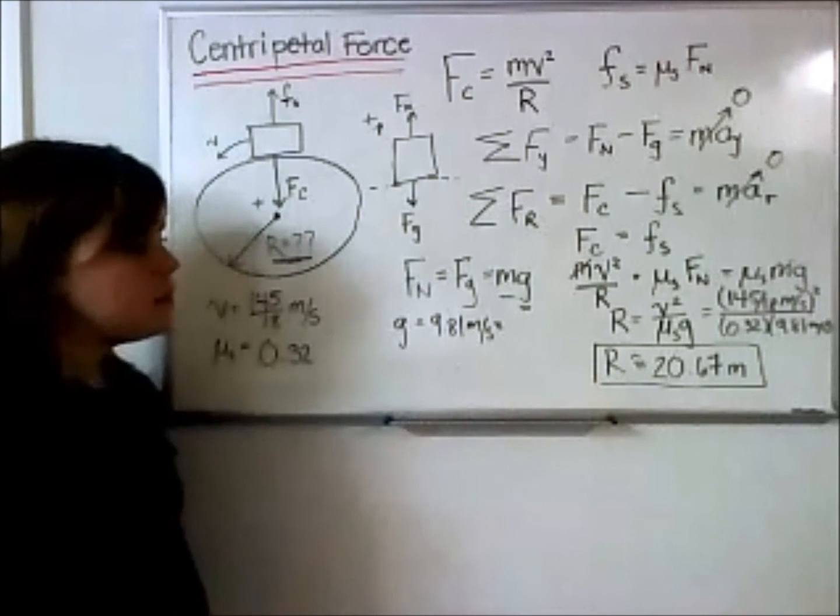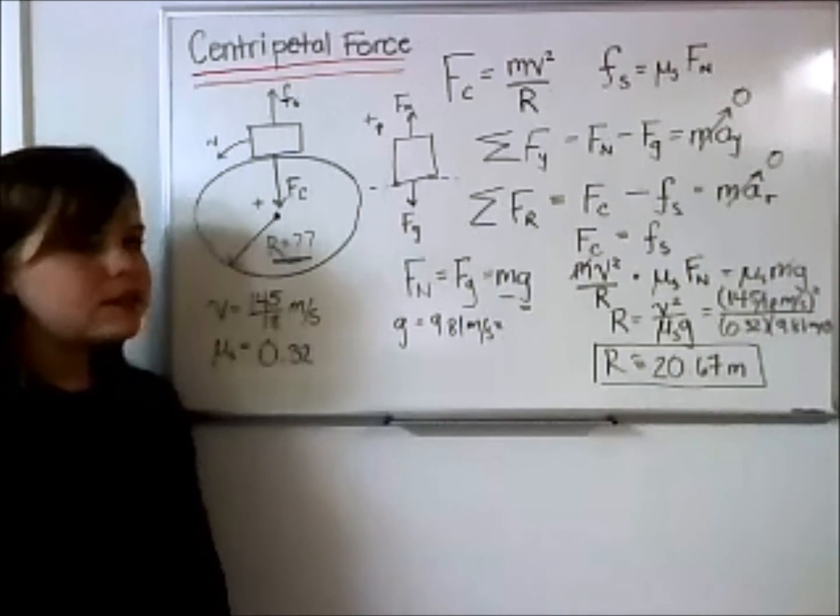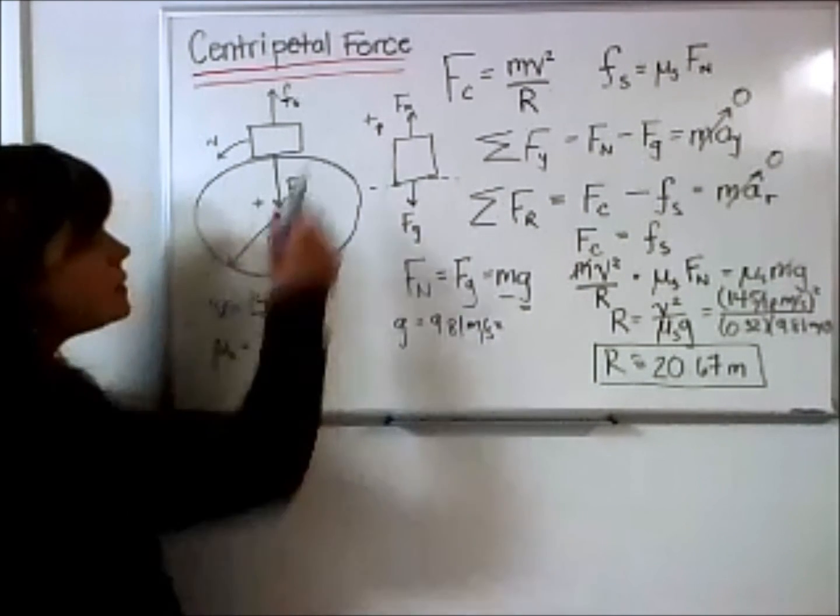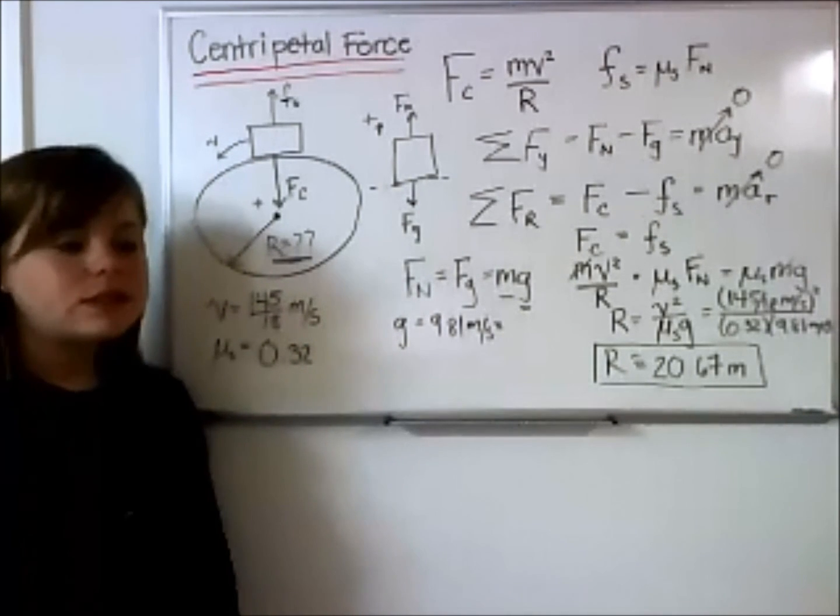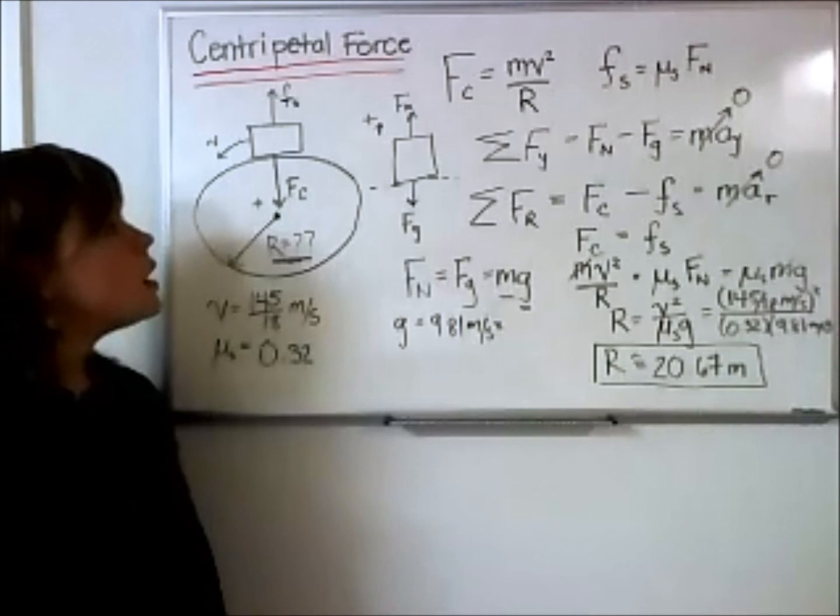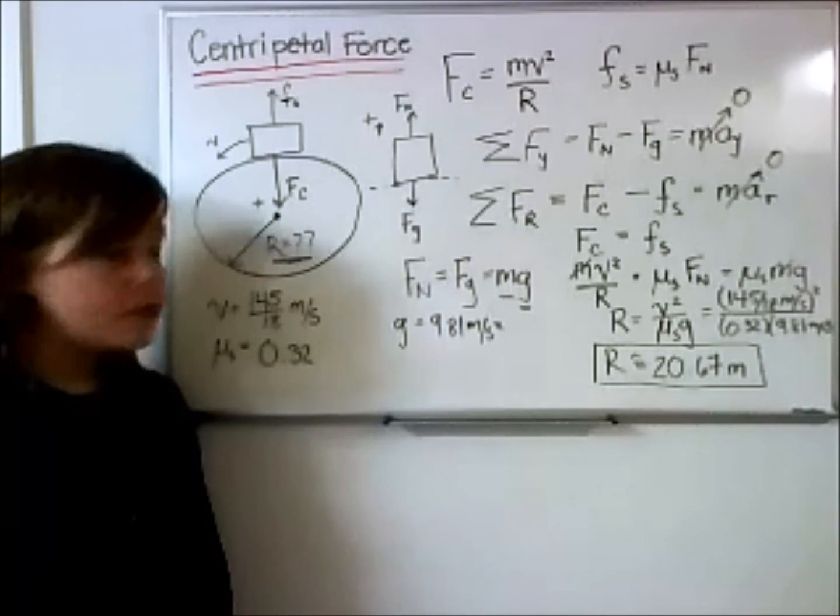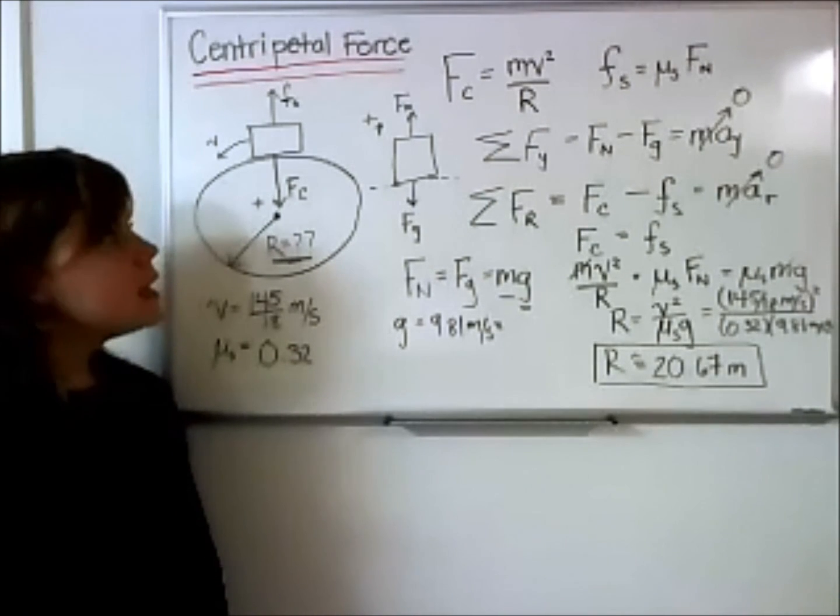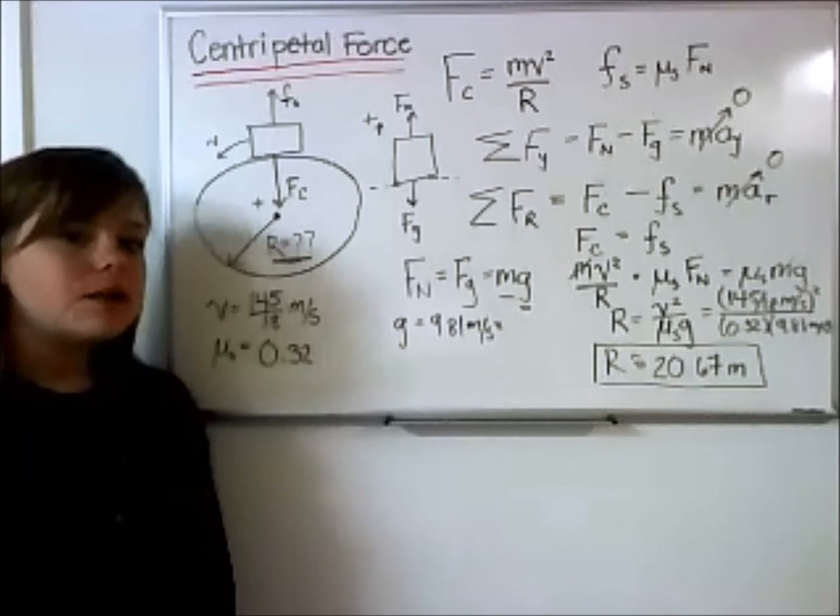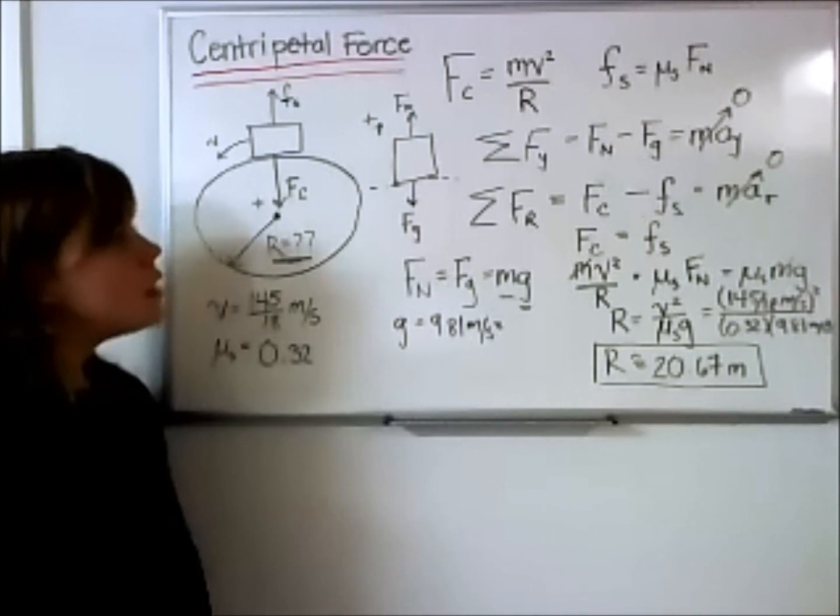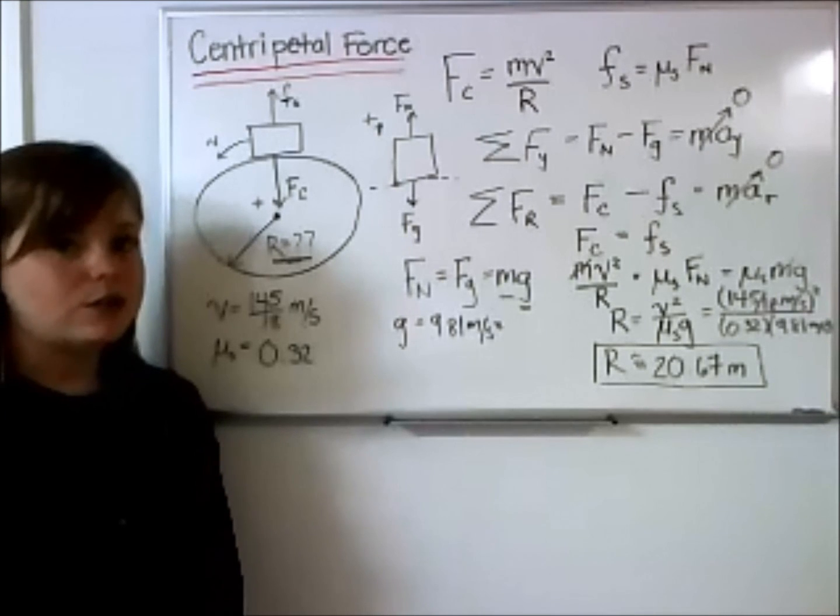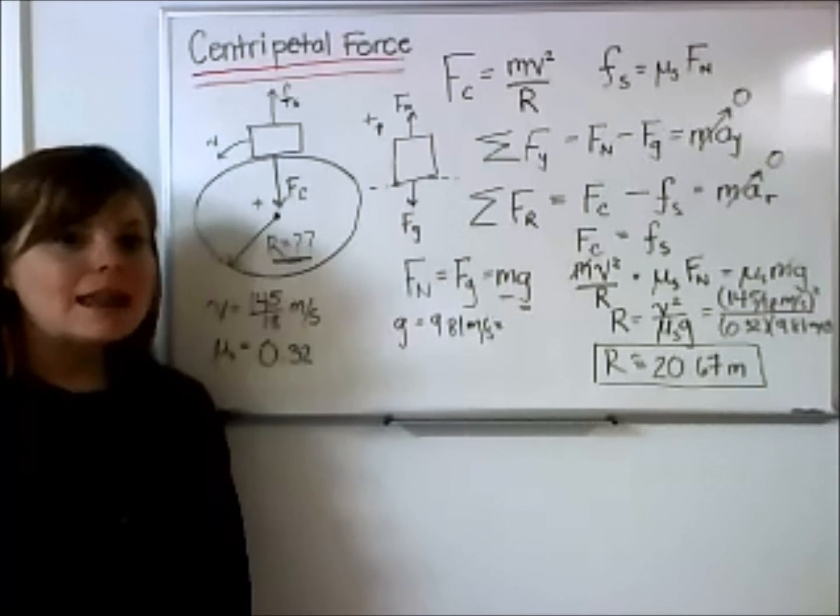So if we know that the radius is 20.67 meters, this car will not be slipping as it goes around the track. So again, this is just exactly the same as you would do for any other force problem. But in this case, we deviated from the typical forces in just x and y to have forces that were acting in a radial direction. And that's it.